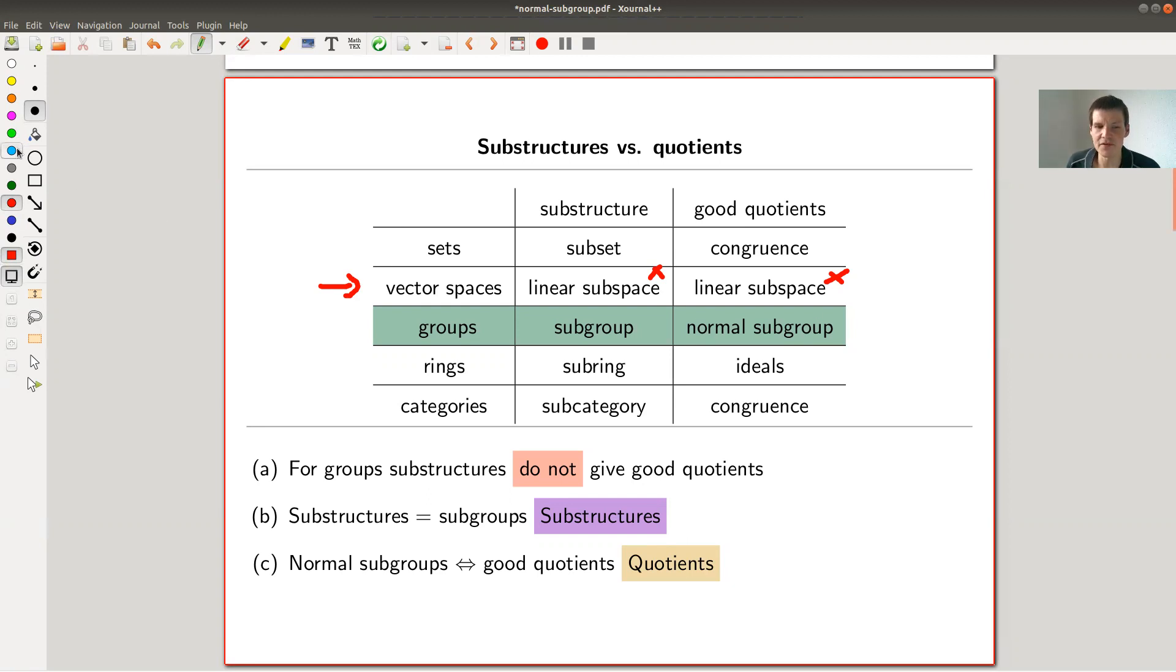For groups and for other objects like rings, as we'll see later, the natural notion of a substructure is a subgroup, but the natural notion to have a good quotient is the one of the normal subgroup. That's the whole point. Sometimes substructures do not give good quotients, and that's where the notion of a normal subgroup comes from.